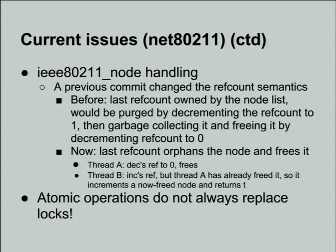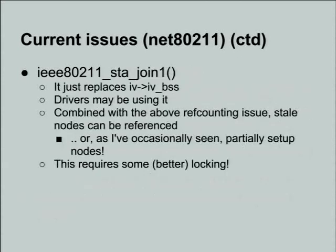There is no list holding the reference anymore, so nodes can be garbage collected at any time. That was a change done by Sam a few years ago to fix issues where the BSS node - which kept the state of the current network - would create a new node every time it needed to change something about the BSS. In a noisy environment you'd constantly be creating and destroying this BSS node and end up with hundreds of them waiting for a 30-second garbage collection. So we changed it so it could immediately be freed, but the side effect is on SMP machines this race condition creeps up quite often.